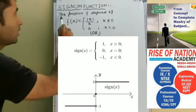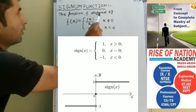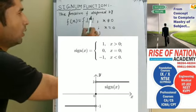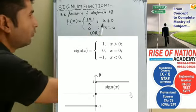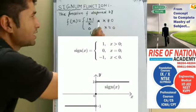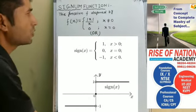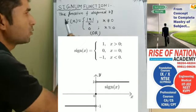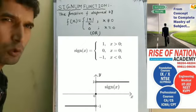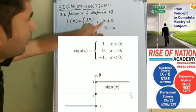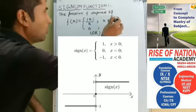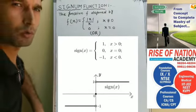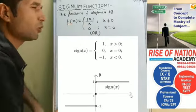What is the signum function? The function f is defined by f(x) = |x| / x when x is not equal to 0, and f(x) = 0 when x is equal to 0. Now what is the value when x is not equal to 0?